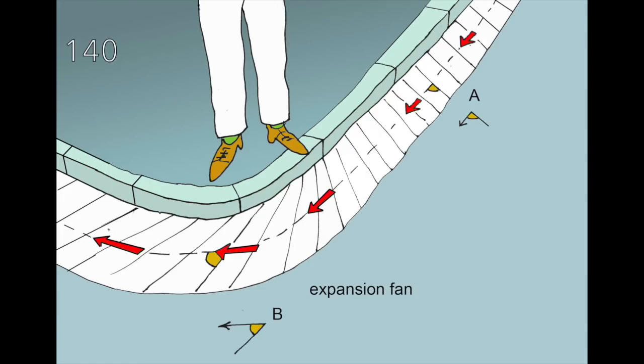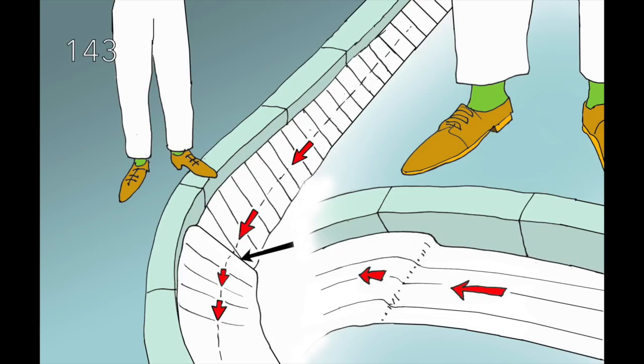In that configuration, the inertial force makes the flow to expand. And in fluid mechanics, we call it an expansion fan. The local value of the density and pressure decrease. In that configuration, the inertial force tends to compress the fluid. The local values of the pressure and density are increased. We have a compression effect.